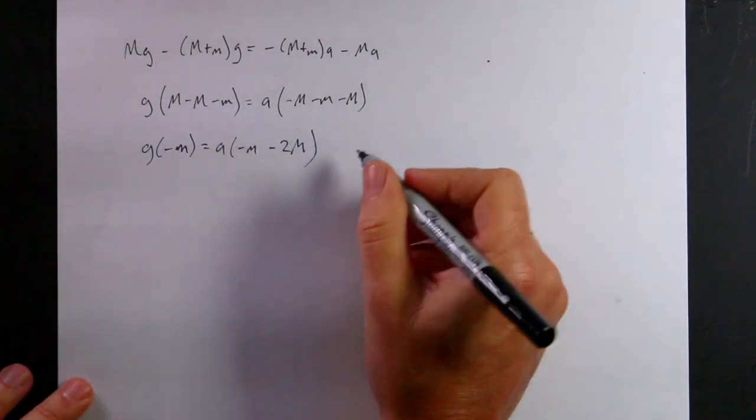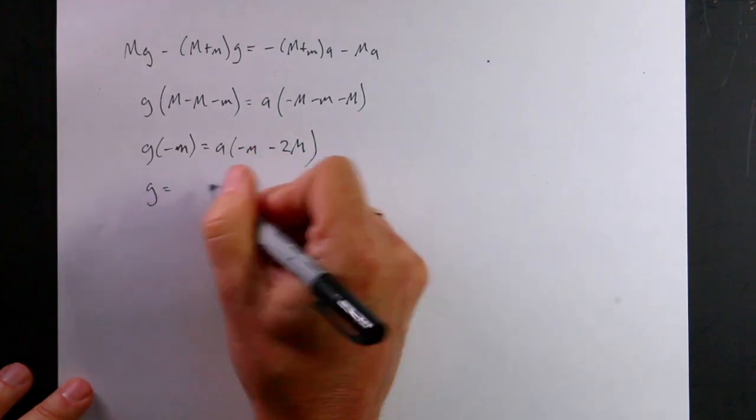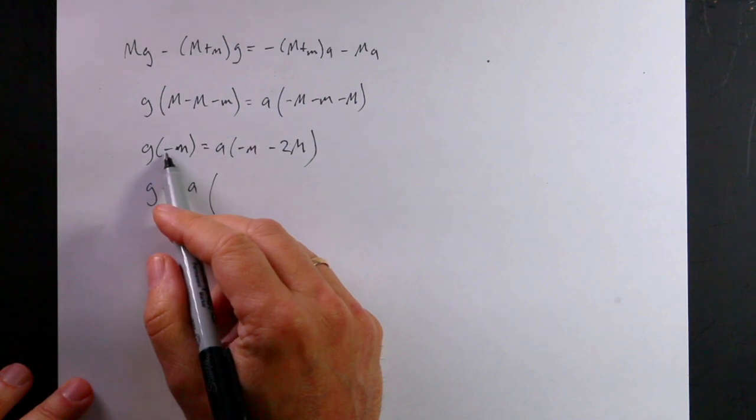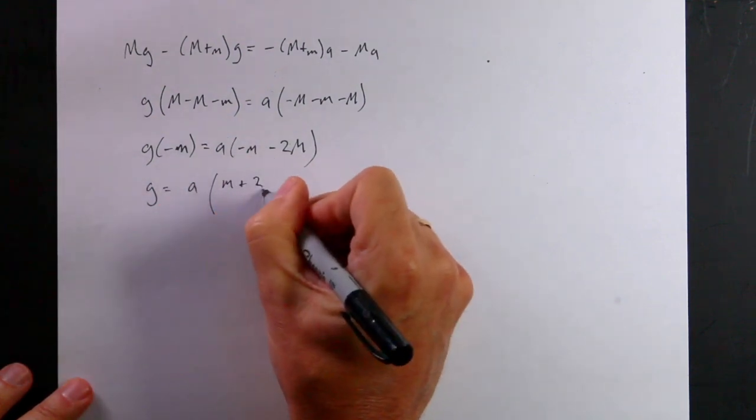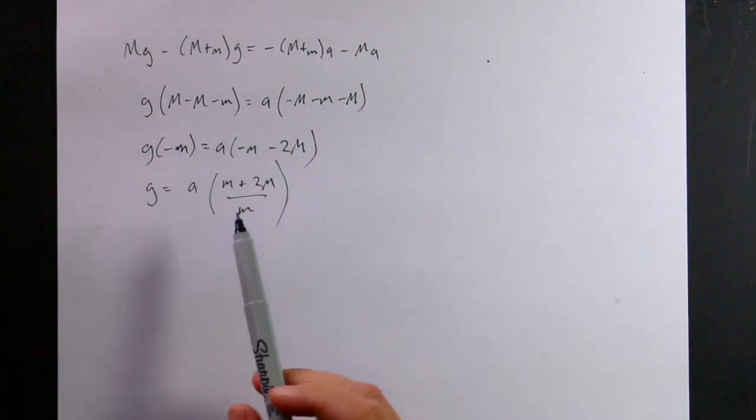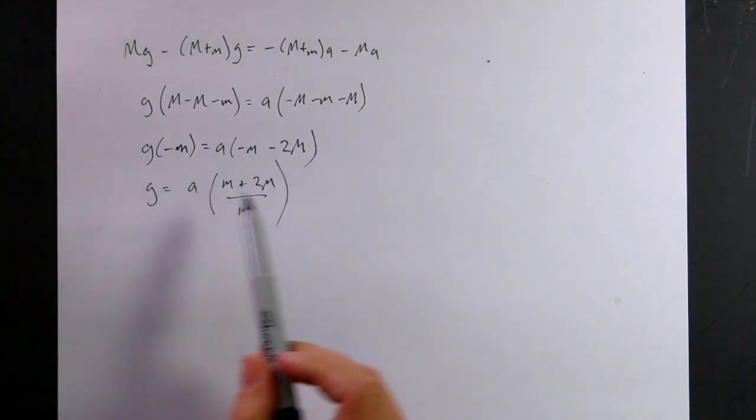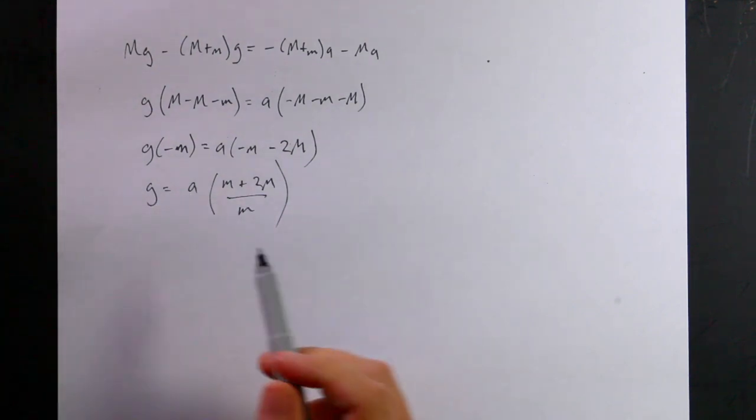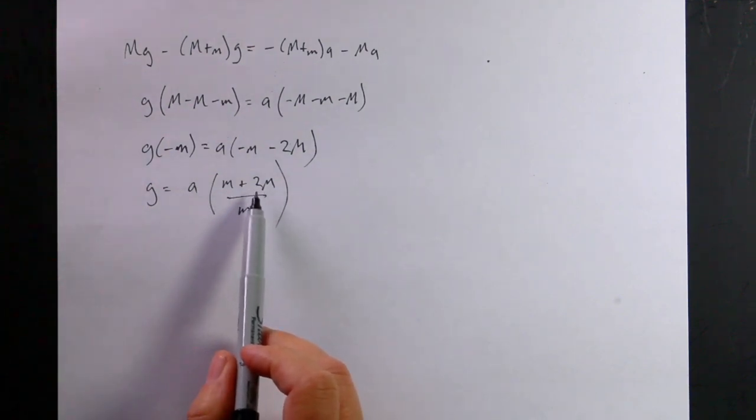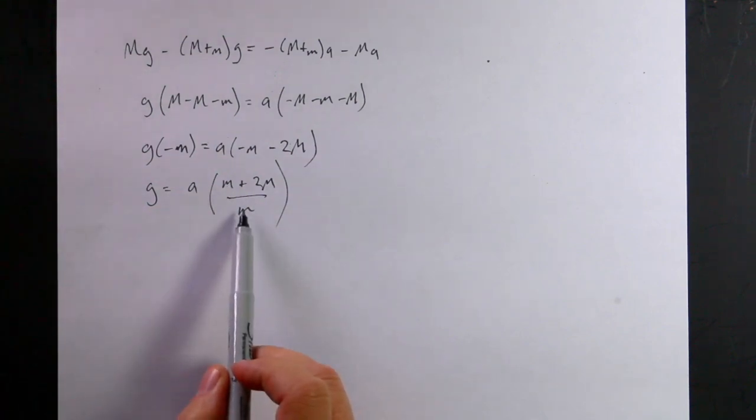And let's just solve for G. So I get G equals A times, I'm going to multiply both sides, I'm going to factor out this negative sign. So I get M plus 2M over M. Now, let's just think, if I knew G, then I could solve for A. That's what you normally do. And in that case, imagine that the mass M was zero, there's zero mass on there.